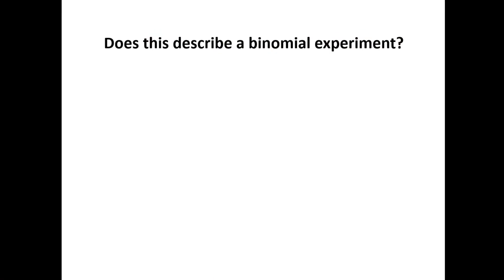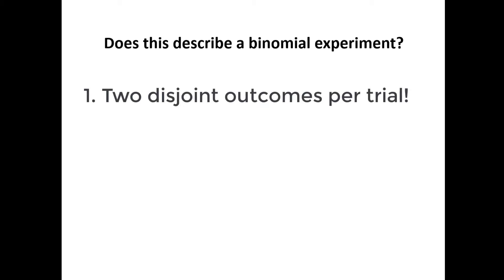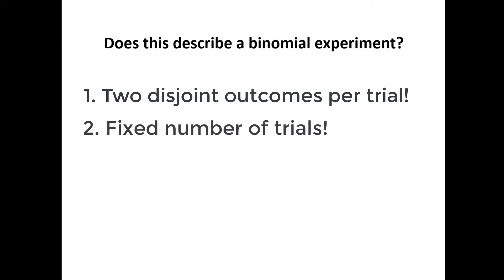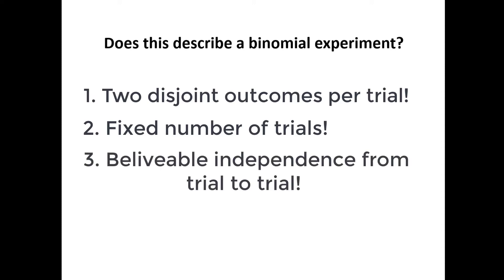Let's look at some different scenarios and see if they fit the bill for binomials. Remember, there are three requirements binomials have to have. Number one, each trial can only have two disjoint outcomes — only two. Number two is a fixed number of trials. And number three, it has to be reasonably believable that the trials do not affect each other, that each trial is independent of all other trials.